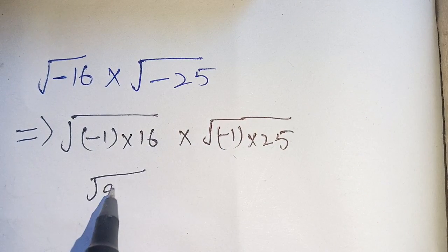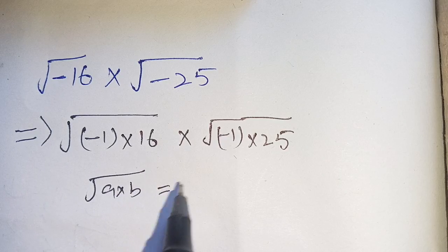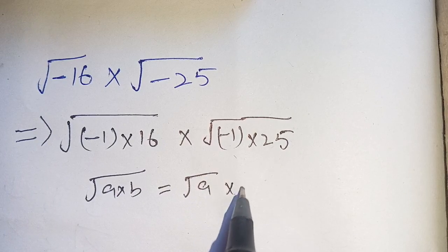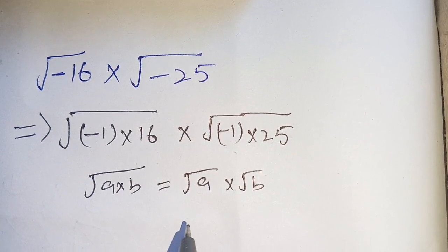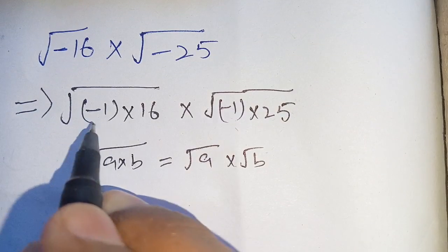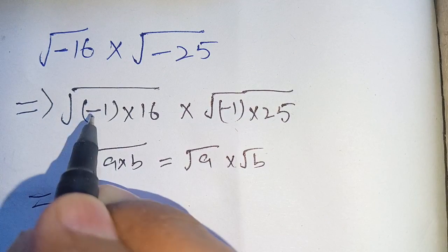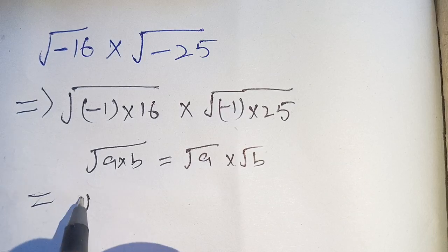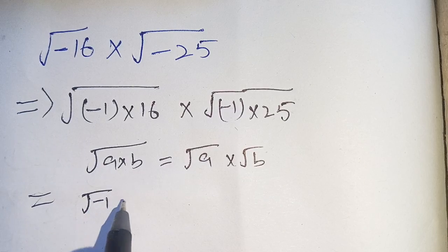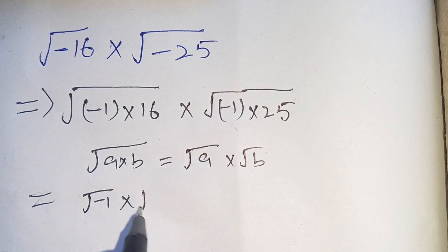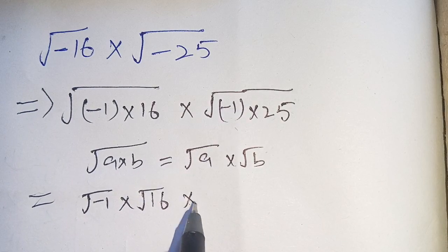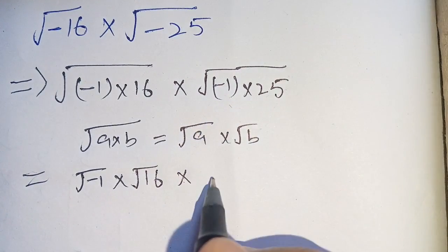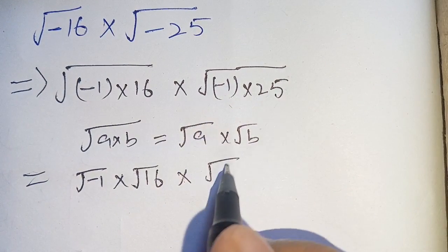Now, from the identity square root of a times b equals square root of a times square root of b, we get: square root of minus one times 16 can be written as square root of minus one times square root of 16, and square root of minus one times 25 as square root of minus one times square root of 25.